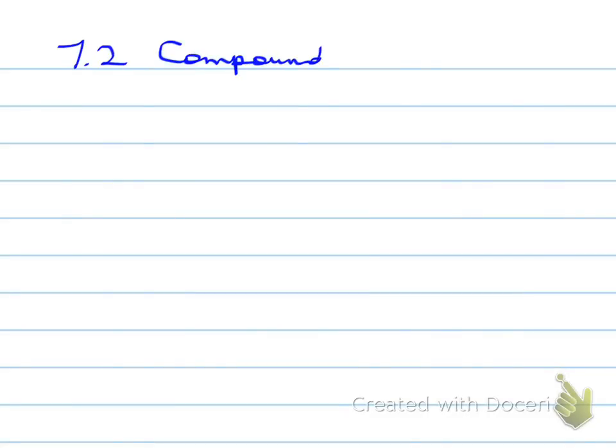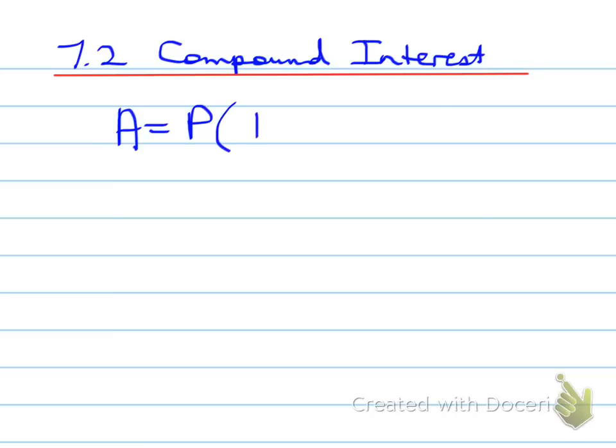All right, 7.2 compound interest. If you're in the 3M class, 7.2 will translate to 8.2 in the 3M class.